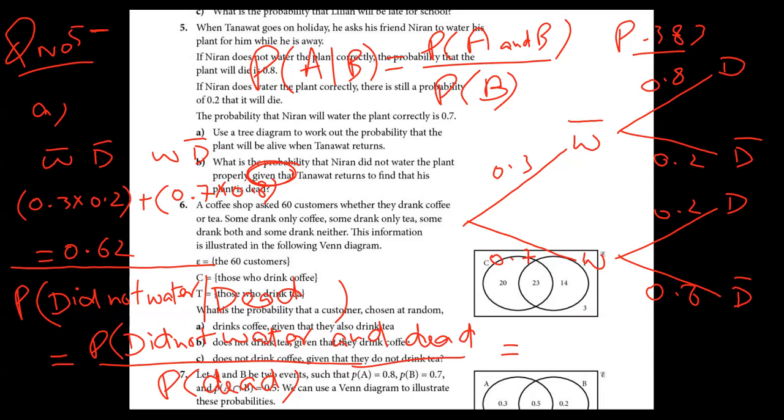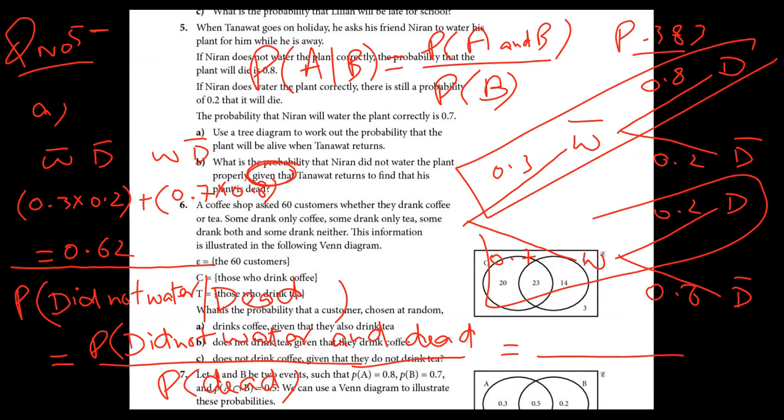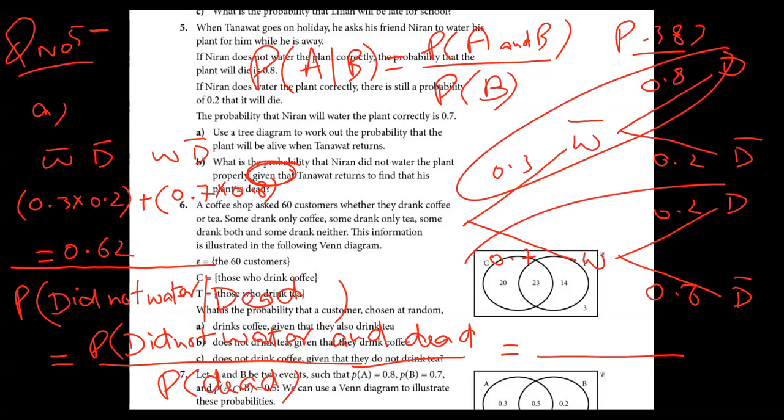First part, dead. This is not dead, this is called alive. And if I subtract one from this, I get this one. Or otherwise he said dead, so what is dead probability? This branch and this branch. This branch is dead and this branch is dead. So I will write in the denominator, either write this into this plus this into this. I'm writing 0.3 times 0.8 plus 0.7 times 0.2.